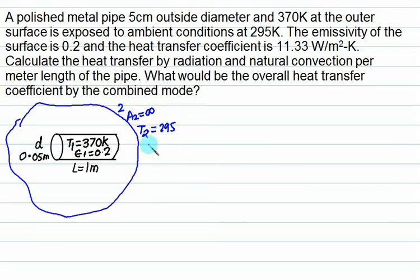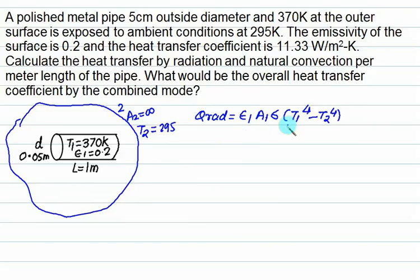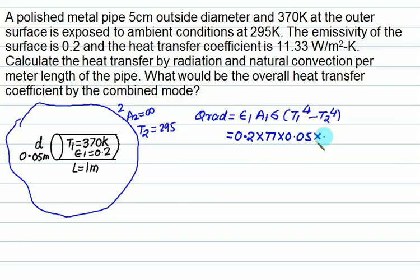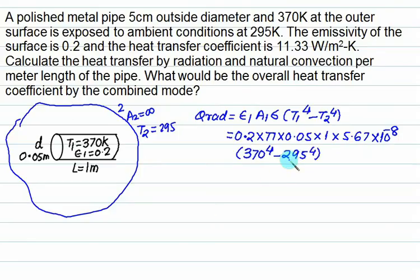This is the same case discussed earlier. Heat transfer by radiation is given by epsilon_1 multiplied by A1 multiplied by sigma, times (T1^4 minus T2^4). Epsilon_1 is 0.2 and the surface area of the cylinder is the peripheral area, which is pi·D·L. Substituting the values, radiation heat transfer equals 19.85 W.